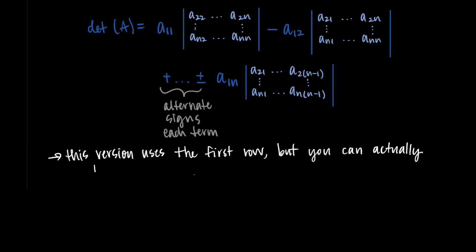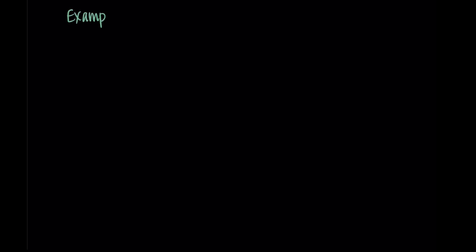The version of the formula I've given goes across the first row, from A11 through A1n, but you can actually pick any row or column and apply the formula the same way. That process is called cofactor expansion if you're interested. Lastly, you can see how this algorithm gets complicated quickly, so thankfully we have technology that can help us find determinants. Now let's do some examples.